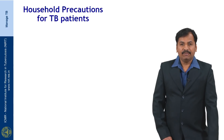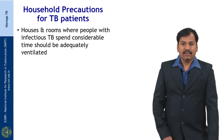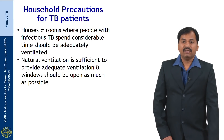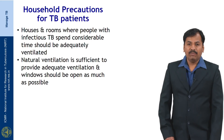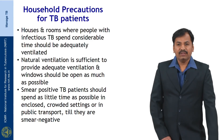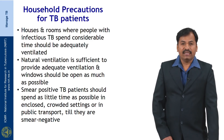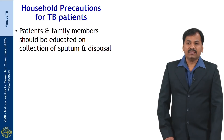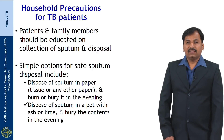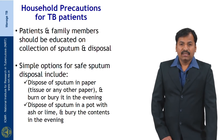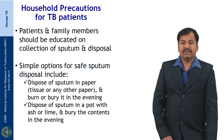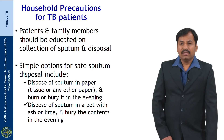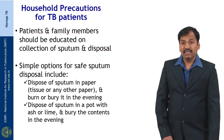Household precautions for TB patients — houses and rooms where people with infectious TB spend considerable time should be adequately ventilated. Natural ventilation is sufficient, and windows should be open as much as possible. Smear positive TB patients should spend as little time as possible in enclosed, crowded settings or in public transport until they are smear negative. Patients and family members should be educated on collection and disposal of sputum. Simple options for safe sputum disposal include disposing in paper or tissue and burning or burying it, or disposing in a pot with ash or lime and burying the contents in the evening.